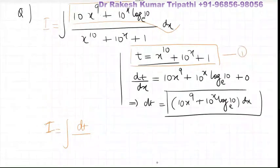So denominator should be replaced by t, and now ensure that the whole integral has been converted into t only. So there should be no x at all. So integration of dt by t.